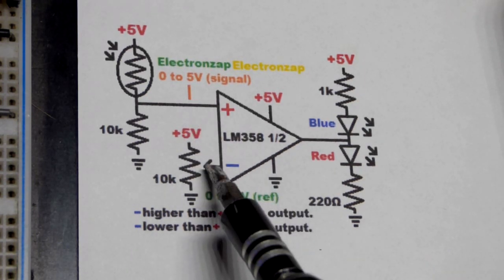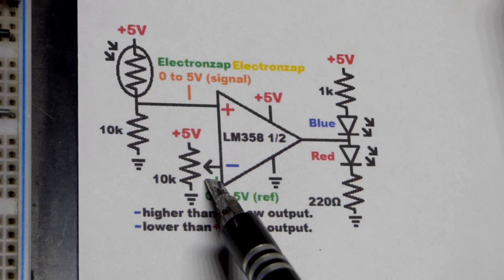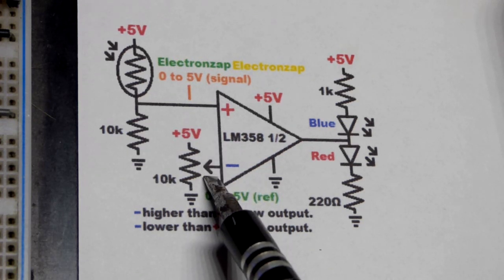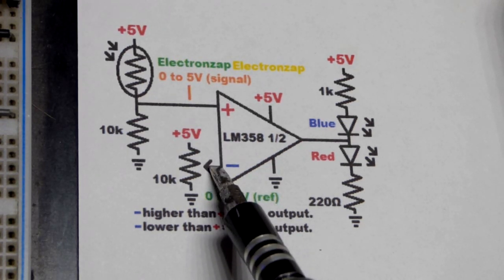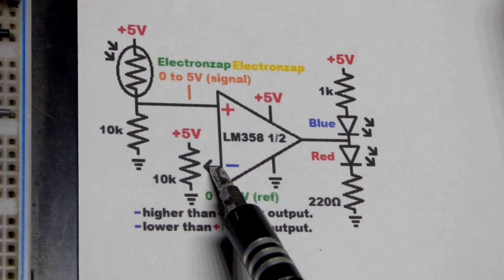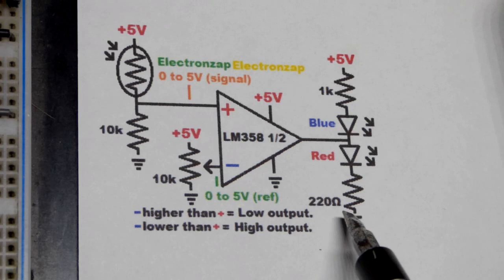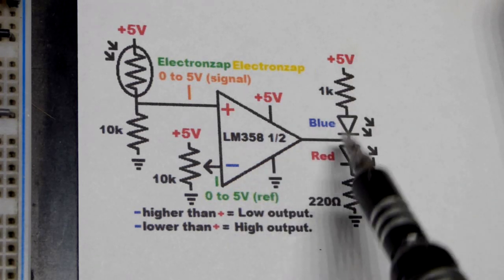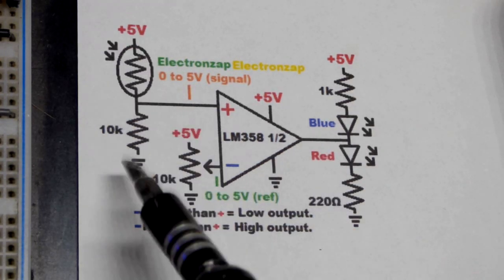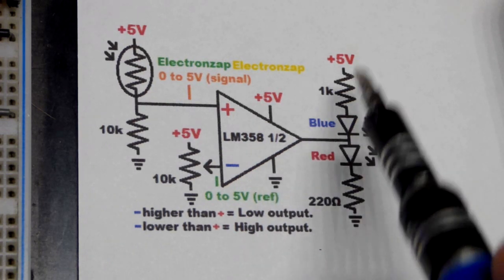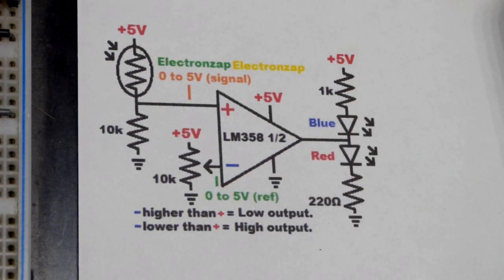But the exact voltage is dependent on the voltage we set at the inverting input right there. So if we set it to 2.5 volts, then we need to get above 2.5 volts there to set the output high. And we'd have to be below 2.5 volts when it comes to light-dependent resistor voltage divider there for the output to be low.